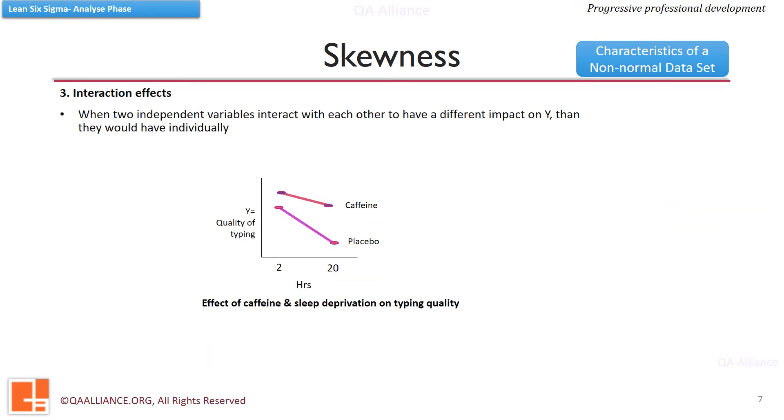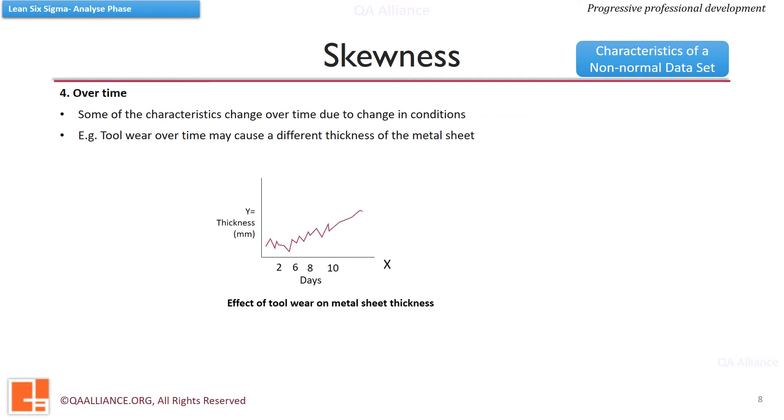Third is due to interaction effects. Interaction effect is visible when two independent variables interact with each other to have a different impact on y than they would have individually. Another reason behind the skewness of the data can be changes happening over a period of time. Some characteristics change over time due to change in conditions. For example, tool wear over time may cause a different thickness of the metal sheet, and this may lead to skewed data.